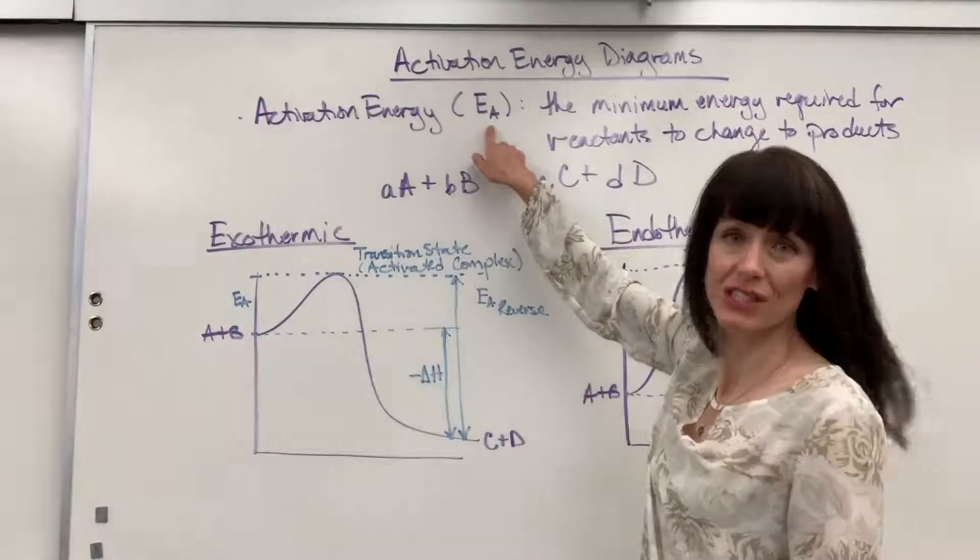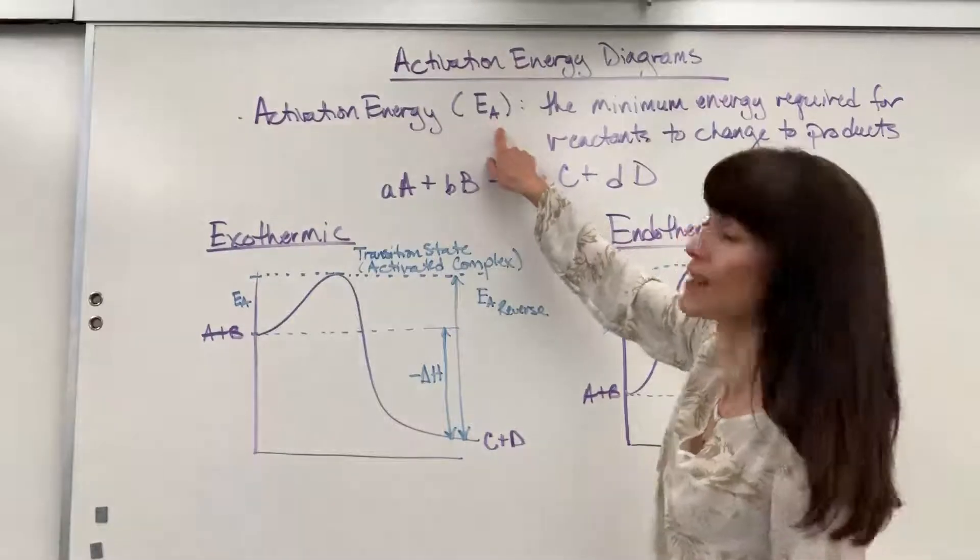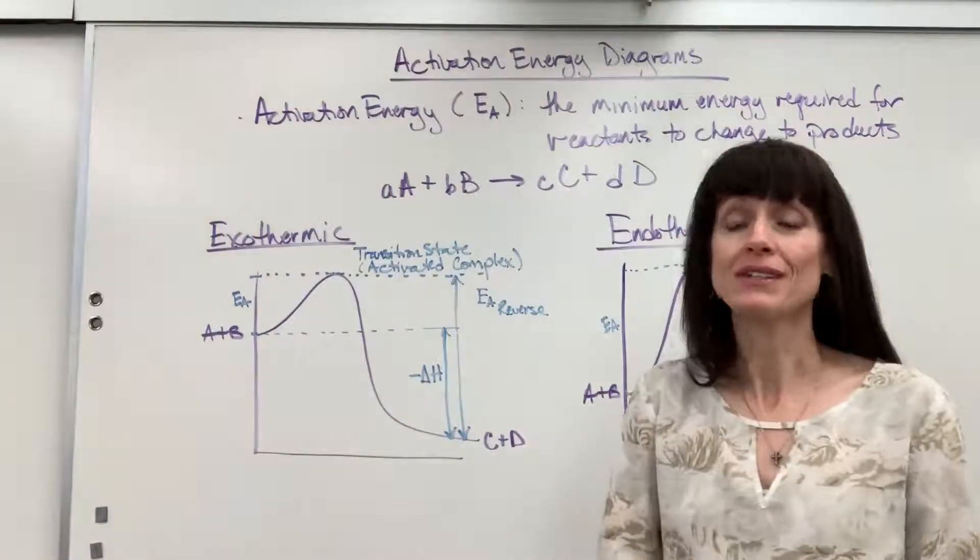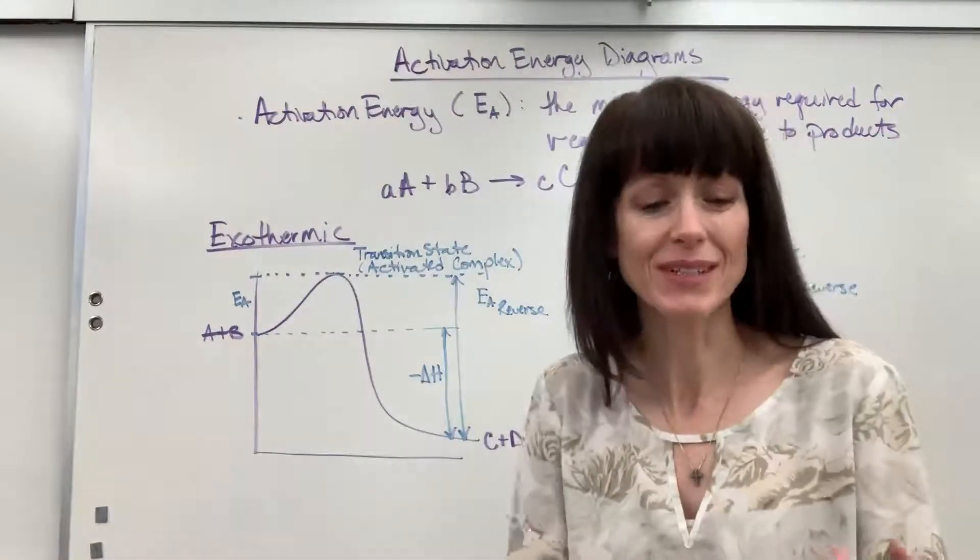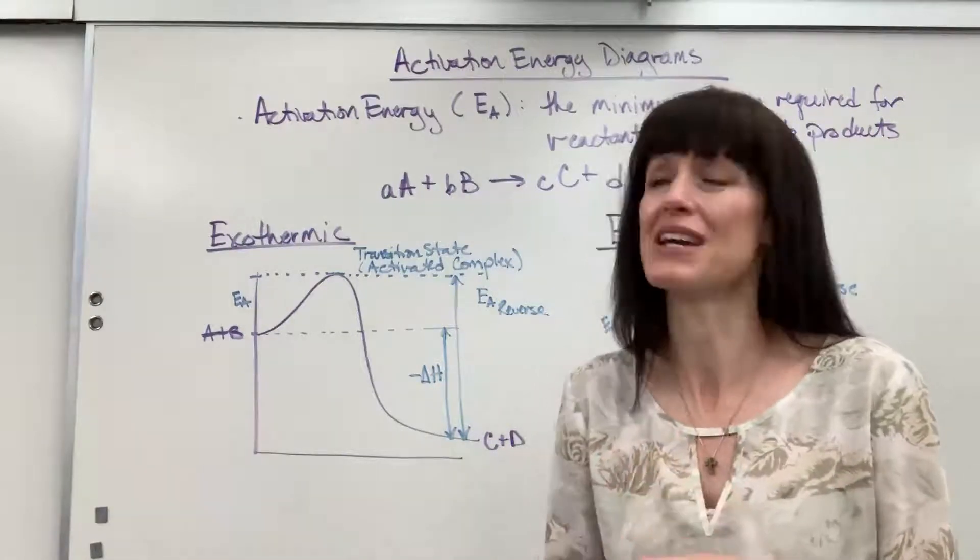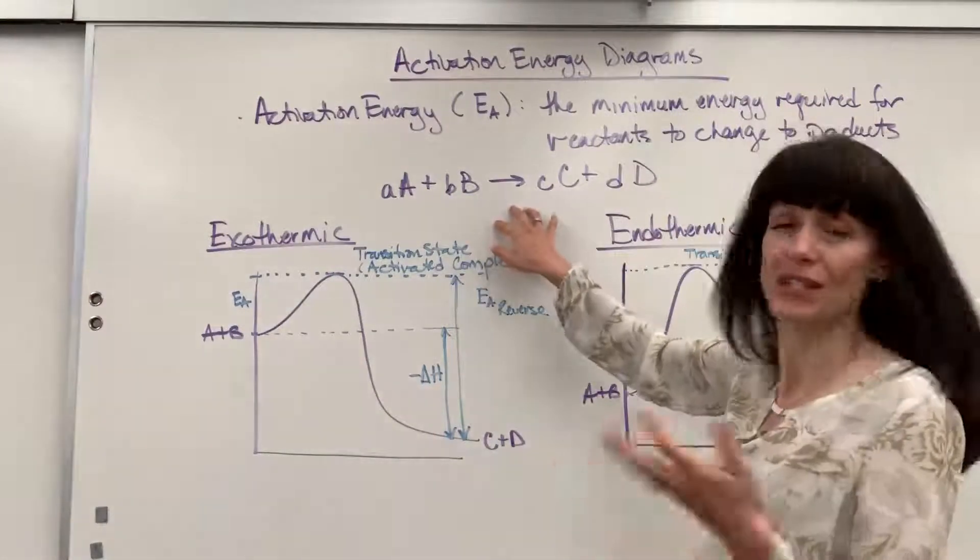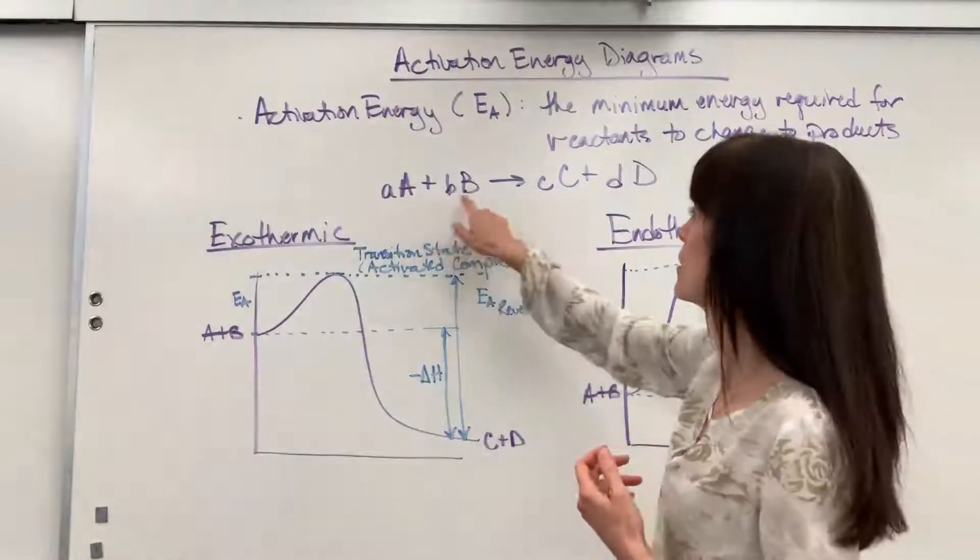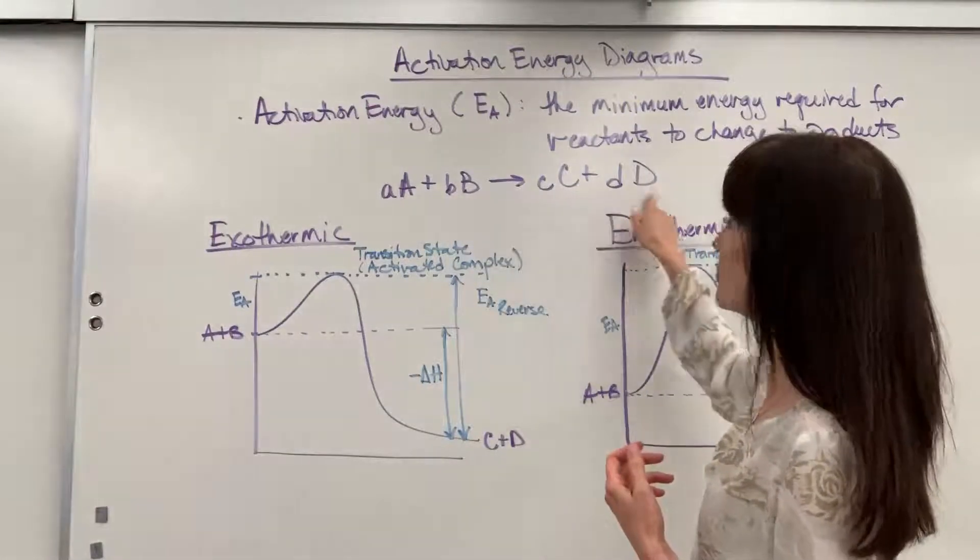Our symbol for activation energy is a capital E with a lowercase a. Now, there are two ways that we can describe this with diagrams: one is with an endothermic and the other is with an exothermic diagram. So I've written a generic equation up here: reactants A plus B yield product C plus D.